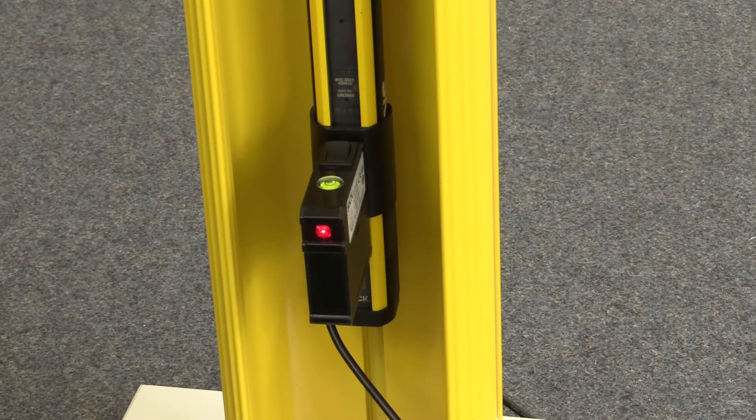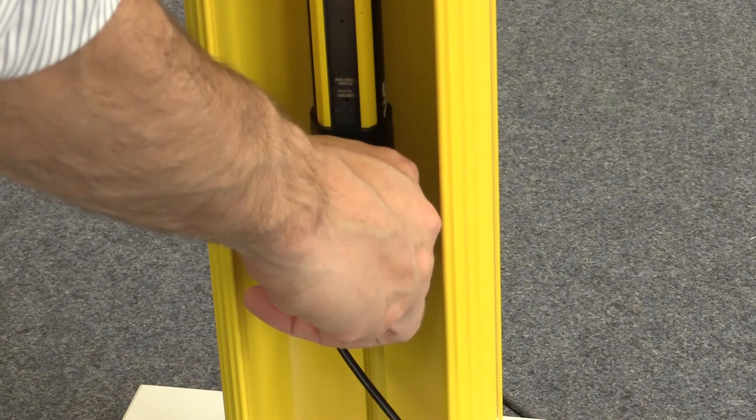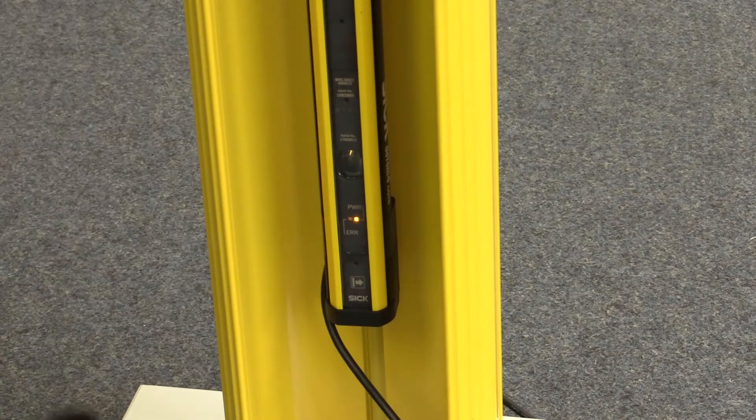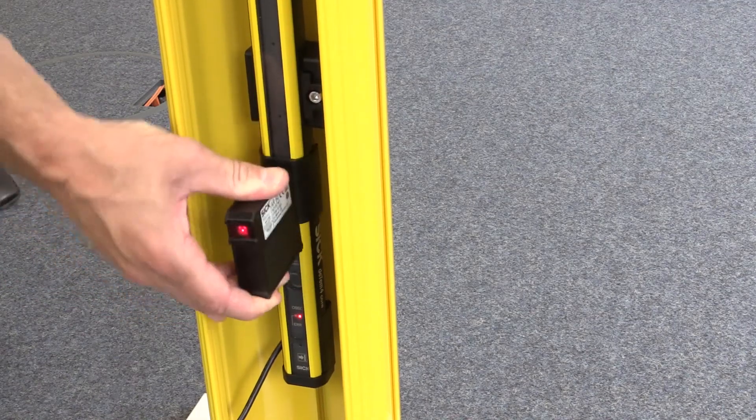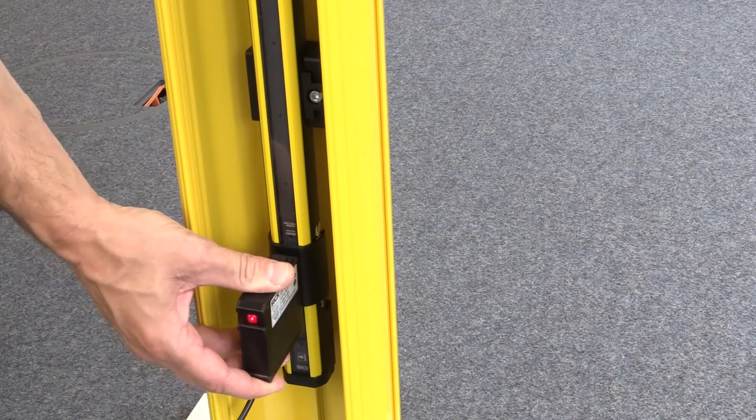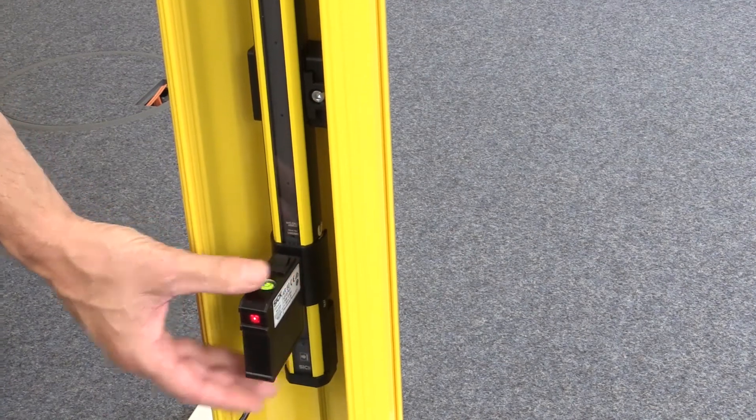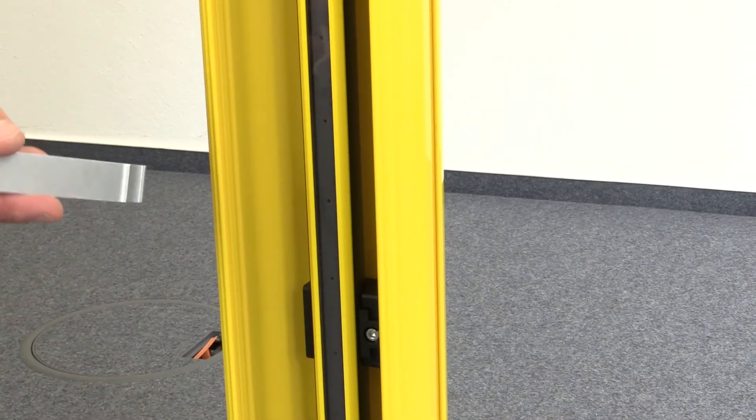Now it is time to remove the AR60 from the sender and place it on the receiver side. From now on all alignments will be done from the receiver side.